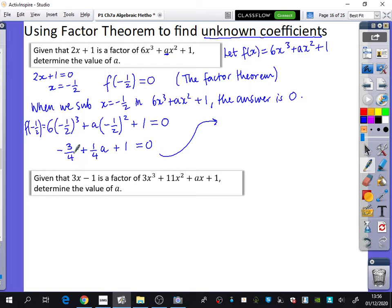Simplifying these terms, we've got 1 minus 3/4. So that's a/4 + 1/4 = 0. a/4 = -1/4, and so a = -1. It's kind of similar to the stuff we were doing before, apart from the unknown thing is now within the function.